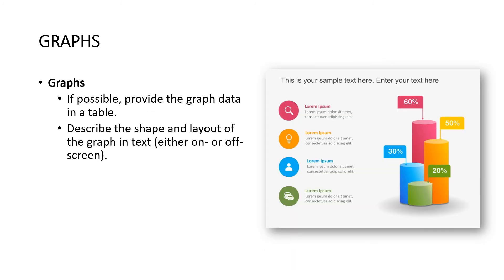For graphs, if possible, provide the graph data in a table. Describe the shape and layout of the graph in text either on or off screen. If it's educational and everyone knows what a pie graph or bar graph is, you don't need to be too descriptive if it's not necessary. You can also add a column that labels each value, so the screen reading software can read that and describe the graph itself.